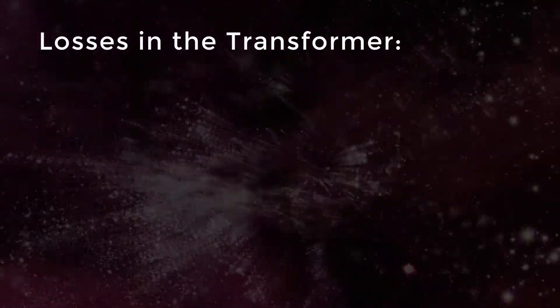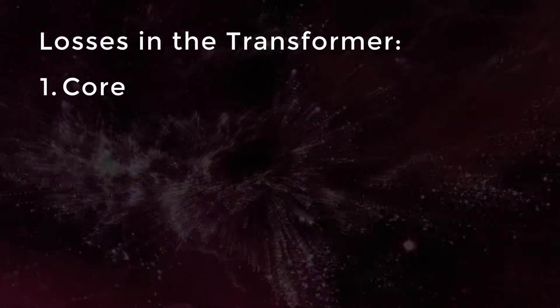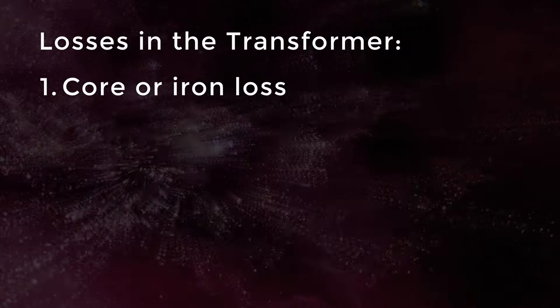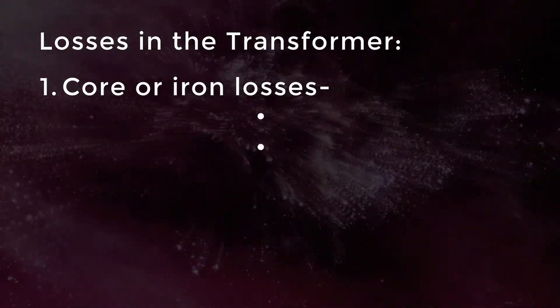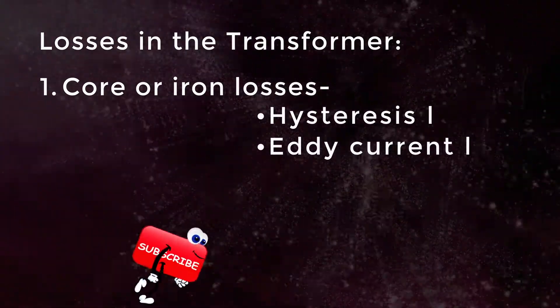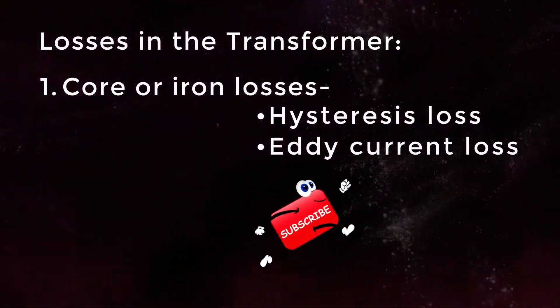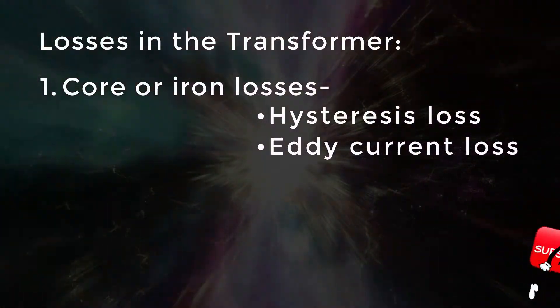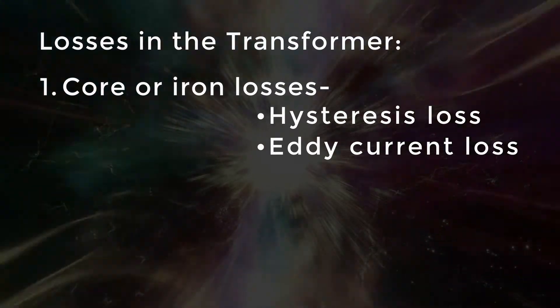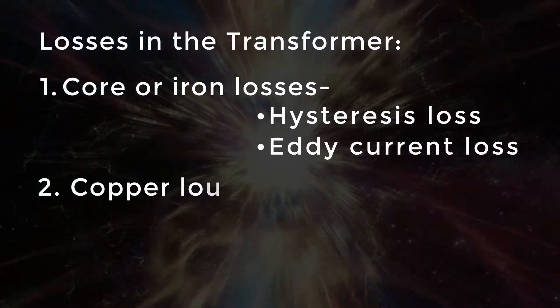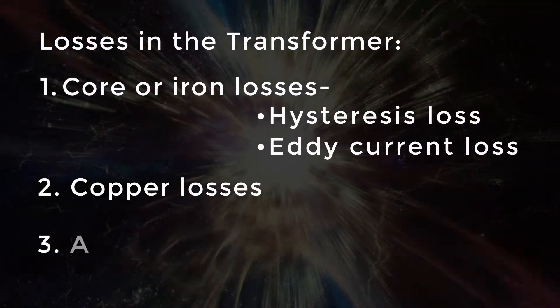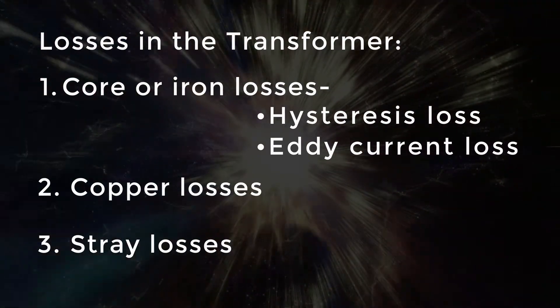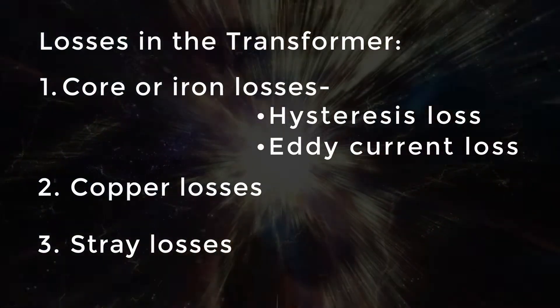Losses in the transformer. Number one: core or iron losses — hysteresis losses and eddy current loss. Number two: copper losses. Number three: stray losses.